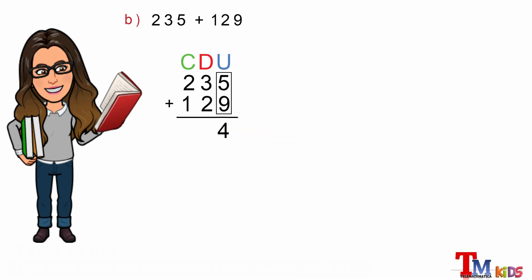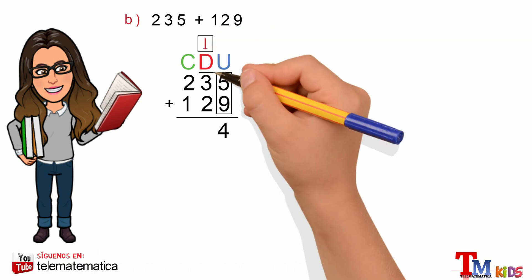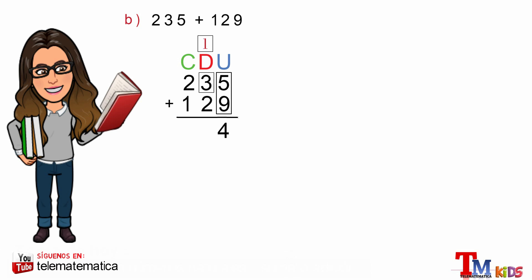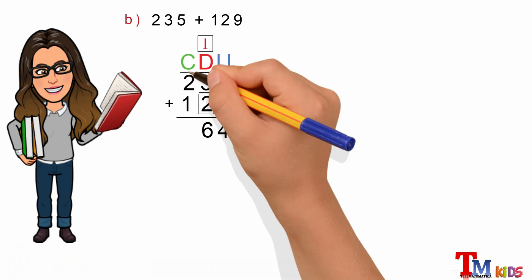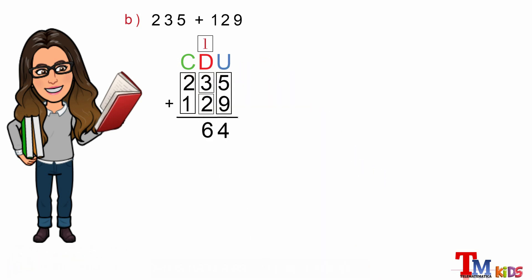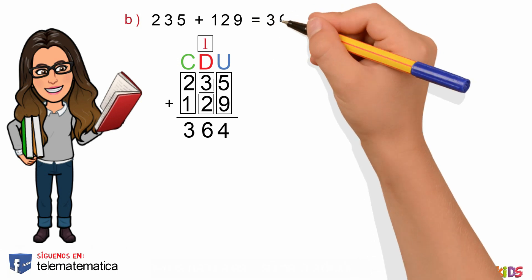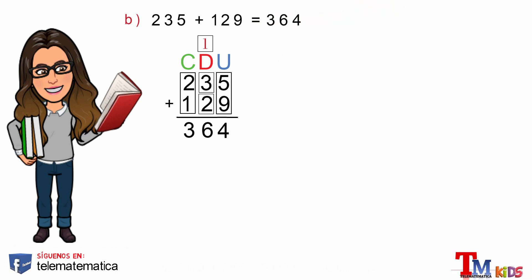Y lo escribiremos encima de la columna de las decenas. En tercer lugar, continuaremos la suma con la columna de las decenas: 1 que llevamos más 3 son 4; 4 más 2 son 6. Y en cuarto lugar, la suma de los números de la columna de las centenas: 2 más 1 son 3. Y este resultado lo escribimos en la operación de 235 más 129.